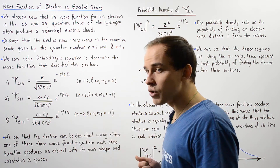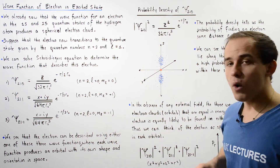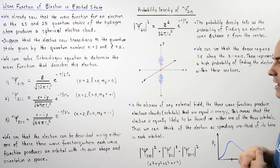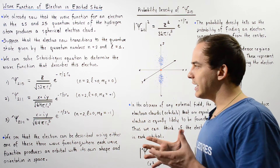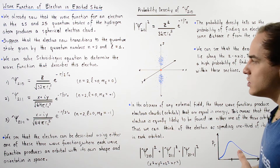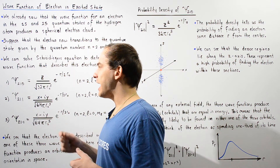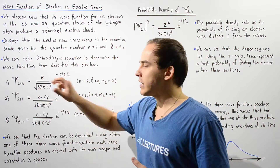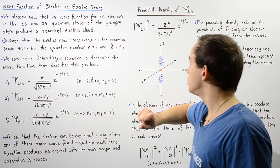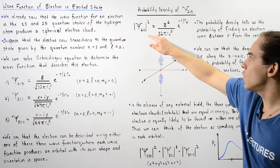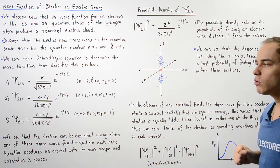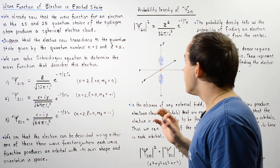The electron can be described using either one of these three wave functions, where each wave function produces an orbital or electron cloud with its own shape, orientation, and size. Let's begin by examining wave function number one. One way to make the wave function physically meaningful and measurable is by transforming it into the probability density — we take the square of the absolute value of the wave function to produce the probability density, as shown in the diagram, by multiplying the right side by itself.